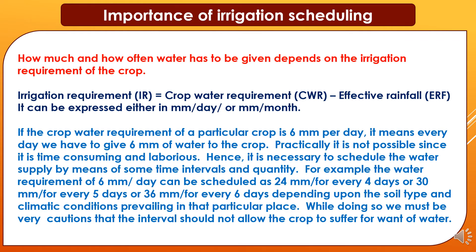Now we will study the importance of irrigation scheduling. How much and how often water has to be given depends on the irrigation requirement of the crop. Irrigation requirement equals crop water requirement minus effective rainfall, and can be expressed in millimeters per day or millimeters per month. If the crop water requirement is 6 mm per day, we must give 6 mm of water daily to the crop. Practically this is not possible as it is time-consuming and laborious. Hence it is necessary to schedule water supply at some time intervals and quantity.